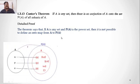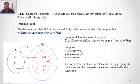Let us illustrate this theorem with an example. Suppose A consists of elements X, Y, Z. Then P(A) consists of all subsets of A, including A itself, and other subsets like {X}, {Y}, {Z}, {X,Y}, {Y,Z}, {X,Z}, and so on. Now suppose there exists a surjection F from A to P(A), and it takes X to {X}, Y to {Y}, and Z to {Z}.